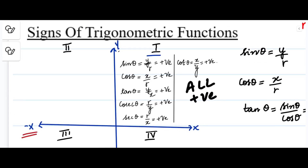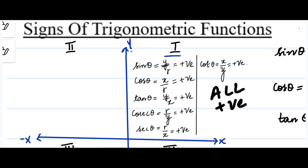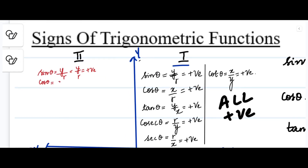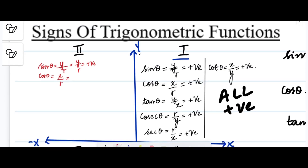Next, let us move on to the second quadrant, where we have a negative x-axis and a positive y-axis. Sine theta: definition is y by r. In the second quadrant, r is always positive and y is positive because we have a positive y-axis, so sine theta is positive. Cos theta: definition is x divided by r. We have a negative x-axis, so it is negative x divided by positive r, giving a negative value — cos theta is negative.